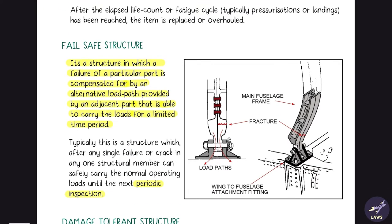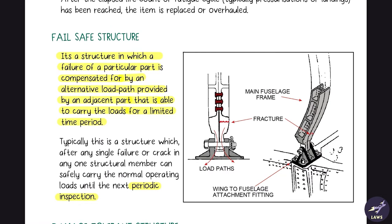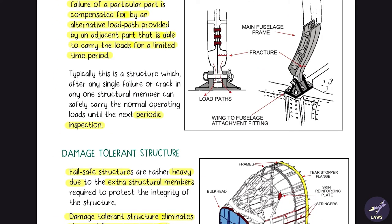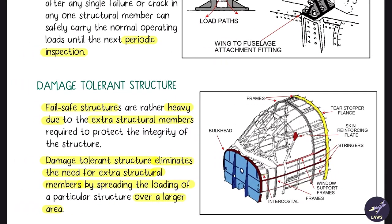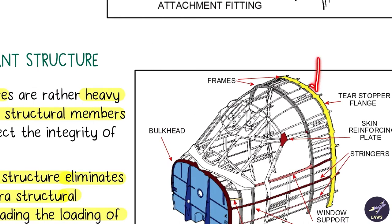Next we have fail safe structure. There are different structural members taking loads, but in case one member fails, if there is a crack somewhere here, the other structural members should take the load until the next inspection cycle. Then we have damage tolerance structure. In fail safe you needed extra structural members to protect the integrity of the structure. In damage tolerance, instead of using multiple structural members, they spread the load over a larger area. As compared to fail safe structure, this is much lighter.